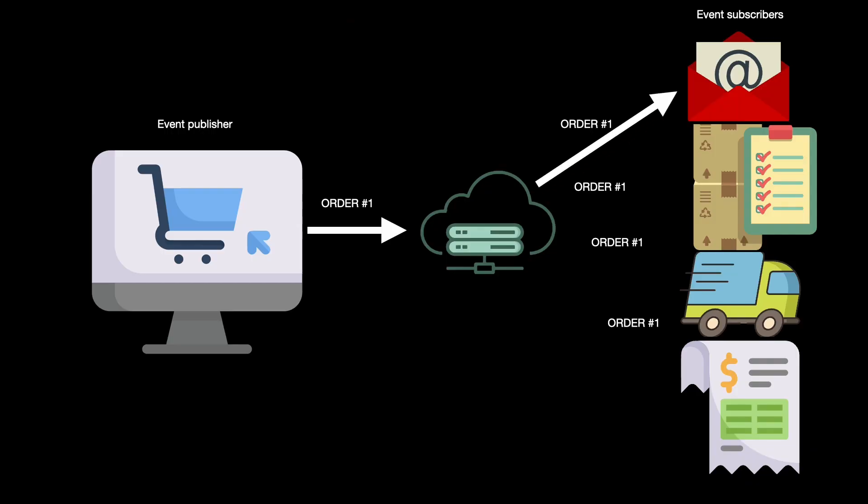After the event router receives the event, it pushes the event details to the event subscribers, or the subscribers pull the event from the router — both options are usually available. When each of the four subscribers receive the event, they complete their necessary tasks and acknowledge to the router that they're done. At this point, the same outcome has been achieved as in the point-to-point setup, just in a slightly different way.